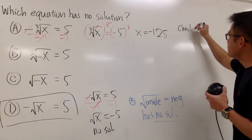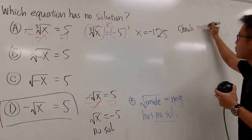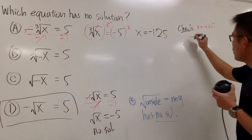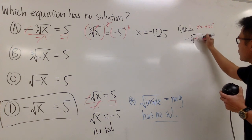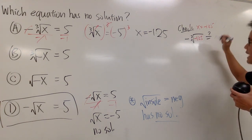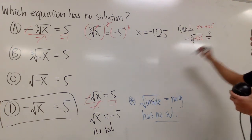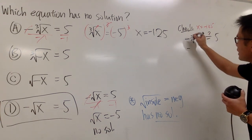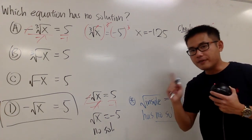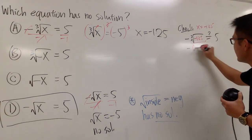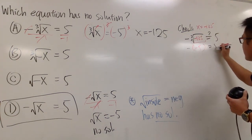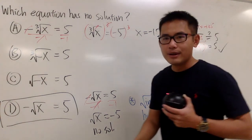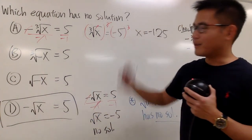Here's a quick check. When x equals negative 125, plugging into the original equation gives negative cube root of negative 125. Does that equal positive 5? Yes, because cube root of negative 125 is negative 5, and negative times negative 5 is positive 5. So that's it for the first one.